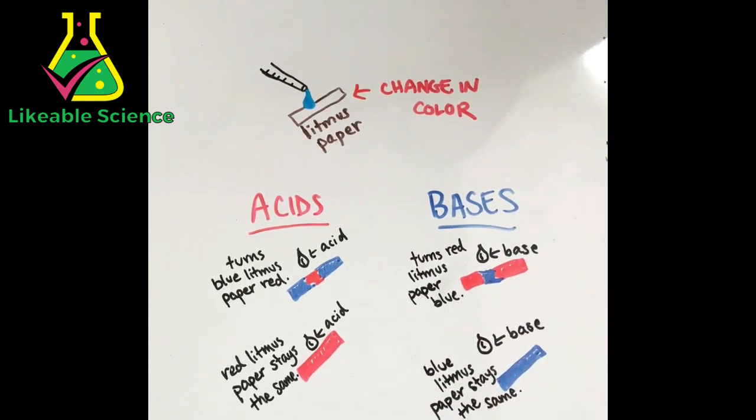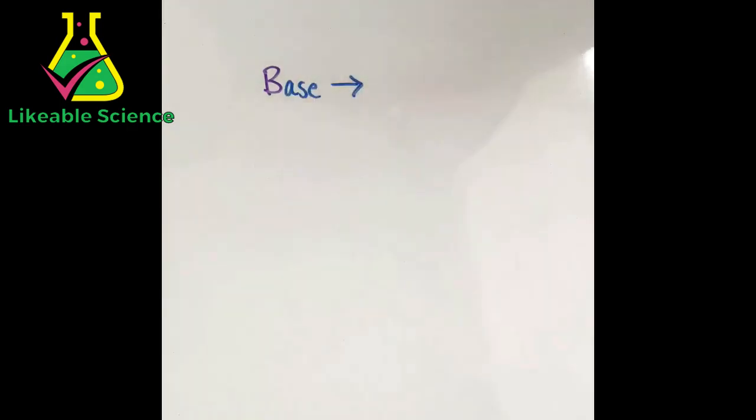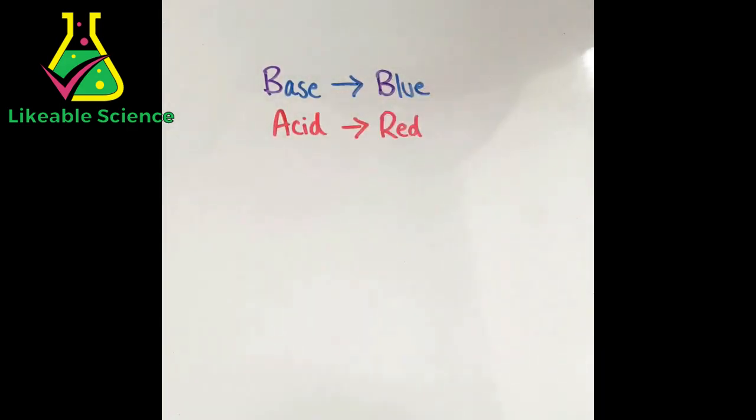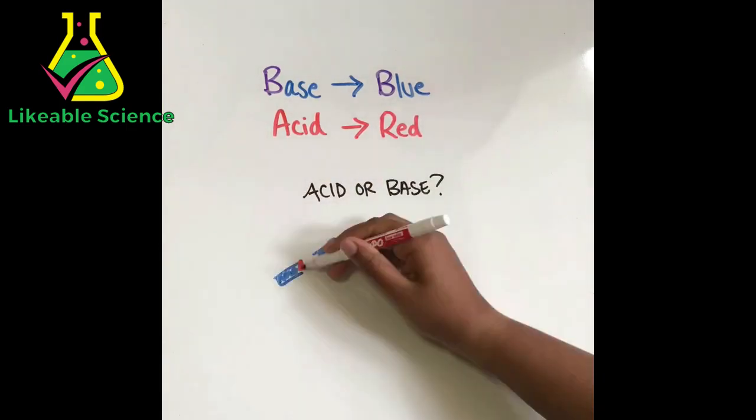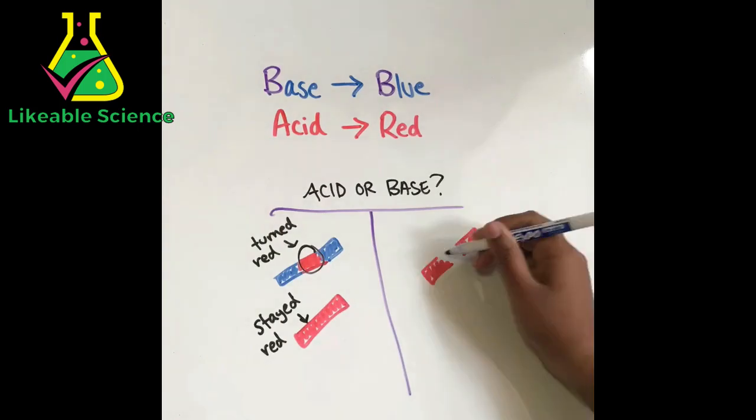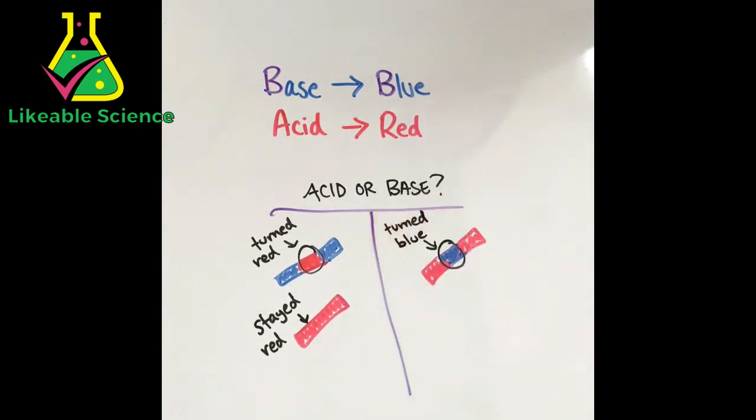A way to remember this is base and blue both start with the letter B, so base equals blue and acid equals red. Let's try some examples. Are these substances an acid or a base? The first one turned blue litmus paper red and made the red paper stay red. The second one turned red to blue and made the blue paper stay blue. The first one made the litmus paper turn to red, so it has to be an acid. The second one made the paper turn to blue, so it has to be a base.